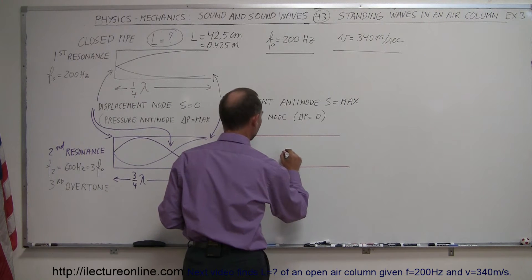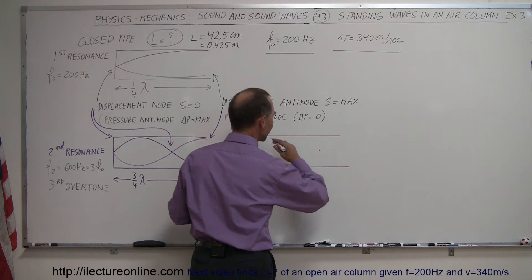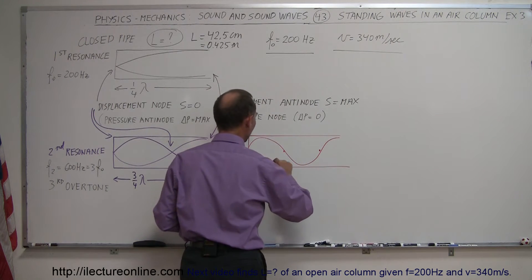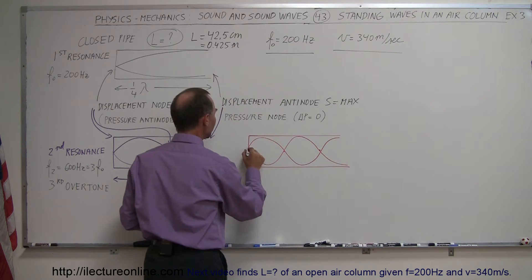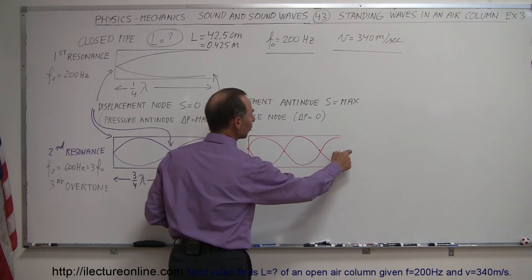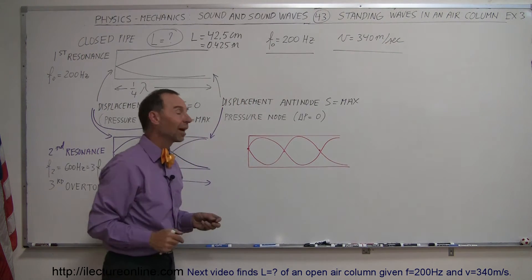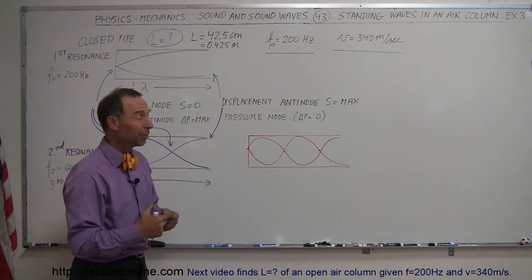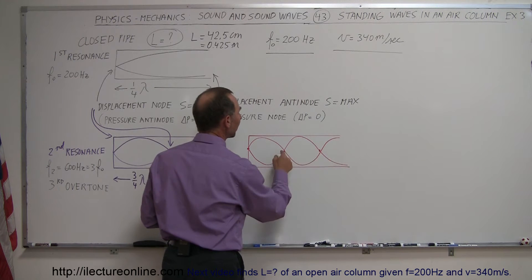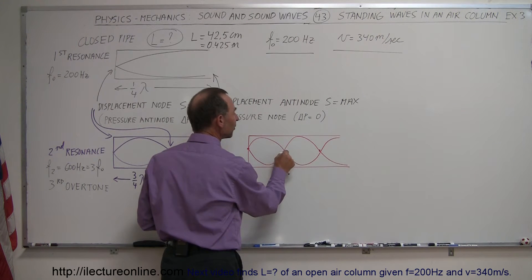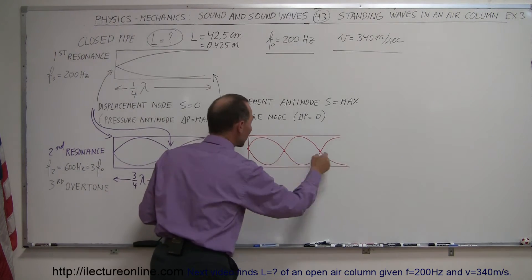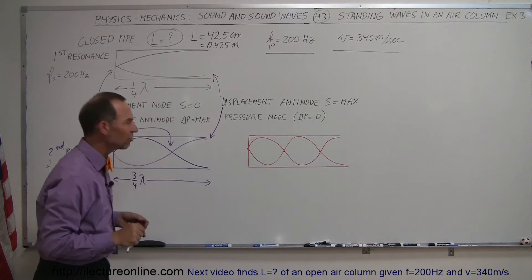We're going to have one node over here, one over there, and if we connect those with a wave, we'll have a situation that looks like that. We have a displacement node at the closed end and a displacement antinode on the open side — both requirements for a standing wave in a closed tube — and then two more displacement nodes, which are places where the displacement of air molecules remains at zero because the incoming wave is in phase with the outgoing wave due to the 180-degree phase shift at the closed end.